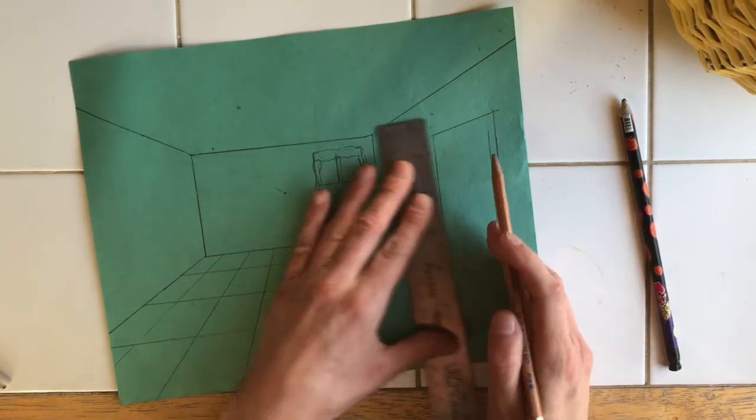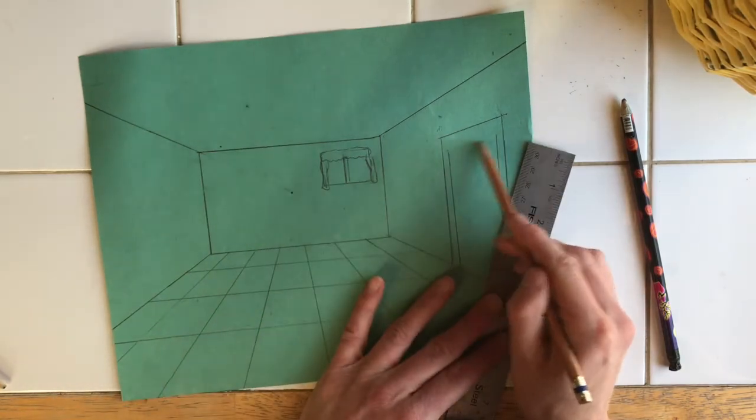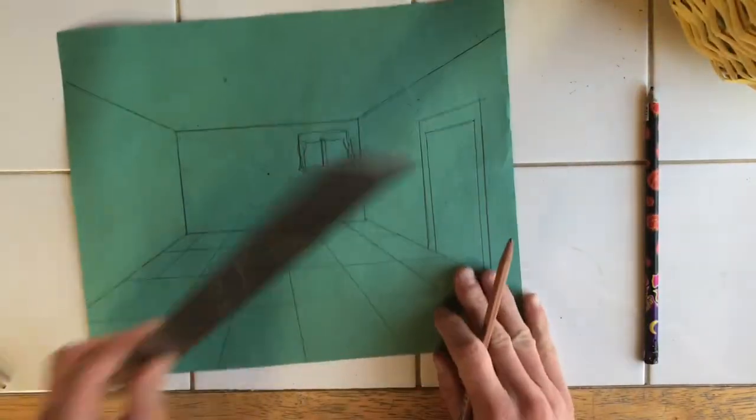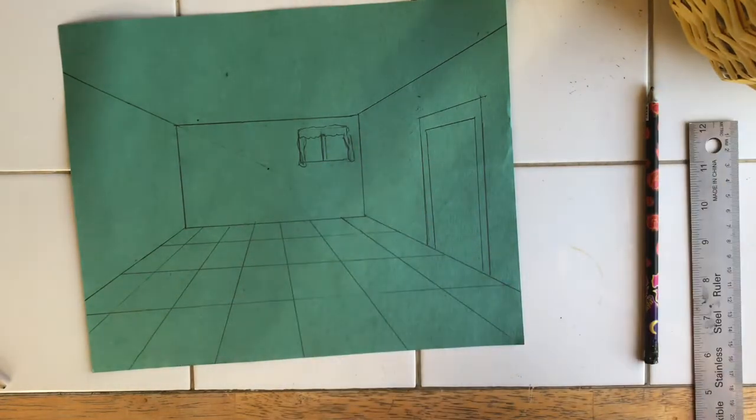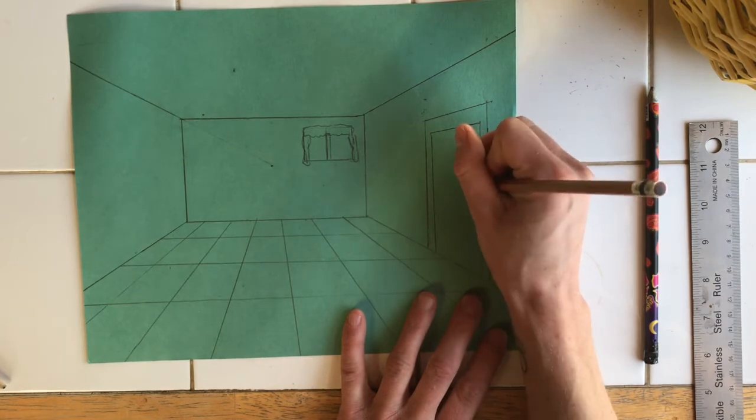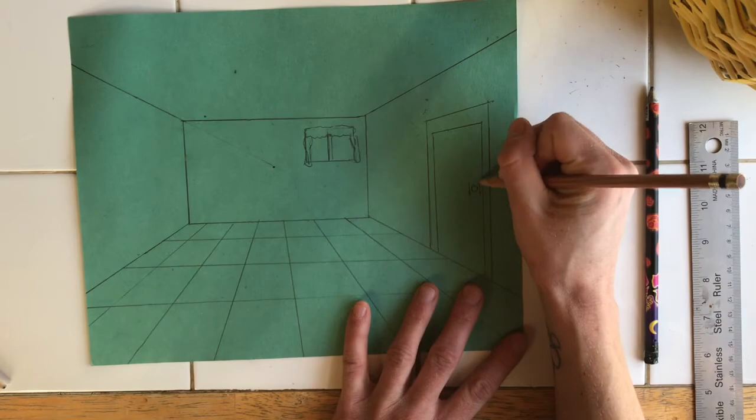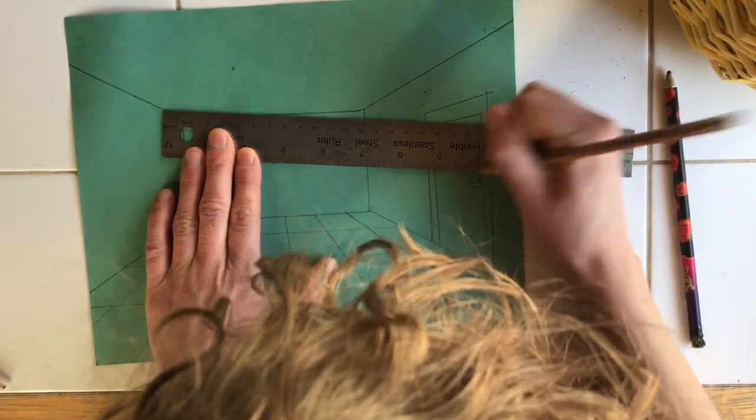I might want to put in a door frame. So two verticals again. Now I can't just put it across here. I need to use the vanishing point. Always using the vanishing point. And we have the top of the door frame. If I want the door closed, put the little door handle in. Two sides of the handle and then I need to use my vanishing point again. Like so.